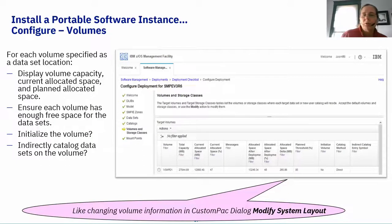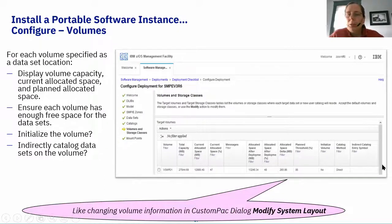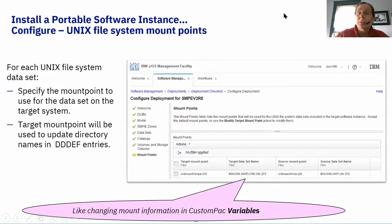The next option is Volumes: volume name, space allocation, whether you want to initialize the volume, whether to indirectly catalog the datasets going to that volume, and what system symbol to use for indirect cataloging. A chat question asks whether there's a plan to include GSD distribution to install with ZOS MF — I believe GSD distribution is an internal IBM distribution mechanism. I'm not certain of their plans; I was focused on how IBM ships to clients. GSD could certainly do this if they wanted to — I'd actually recommend it because it's pretty easy.